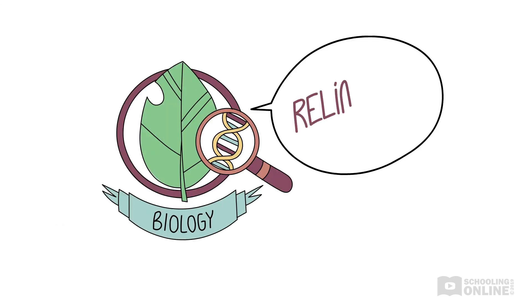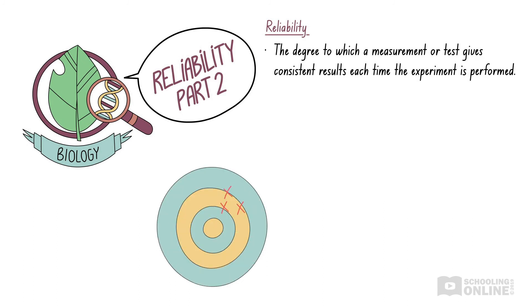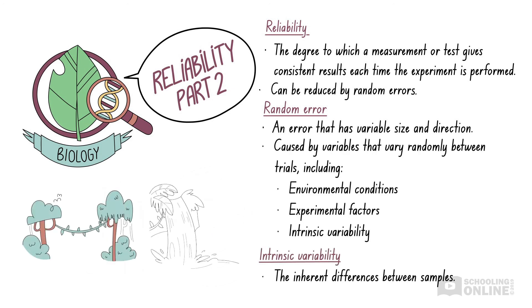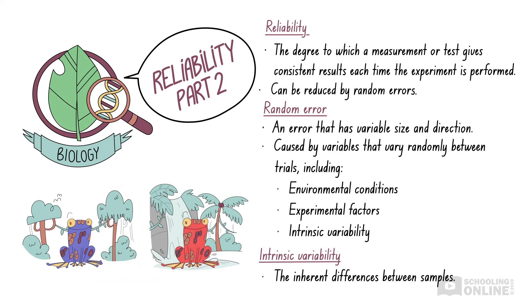Let's revise what we've discussed in this video. Reliability is the degree to which a measurement or test gives consistent results each time the experiment is performed. The reliability of an experimental procedure can be reduced by random errors. A random error is an error that has variable size and direction. Random errors are caused by variables that vary randomly between trials, including environmental conditions, experimental factors and intrinsic variability. Intrinsic variability relates to the inherent differences between samples, such as between different organisms of the same species.